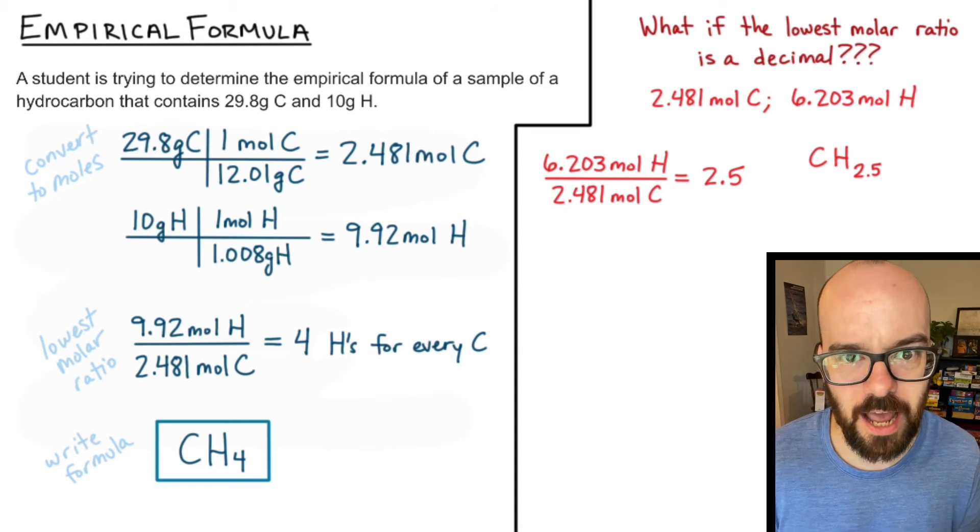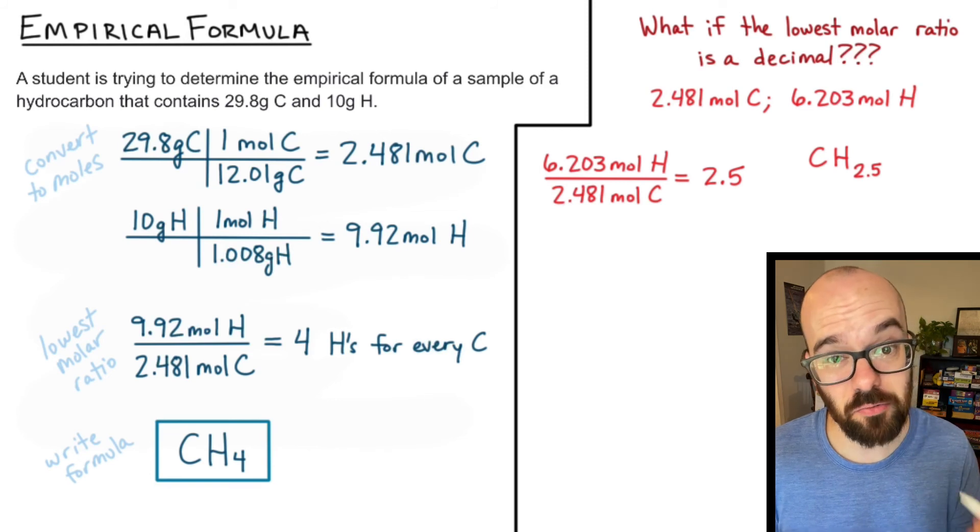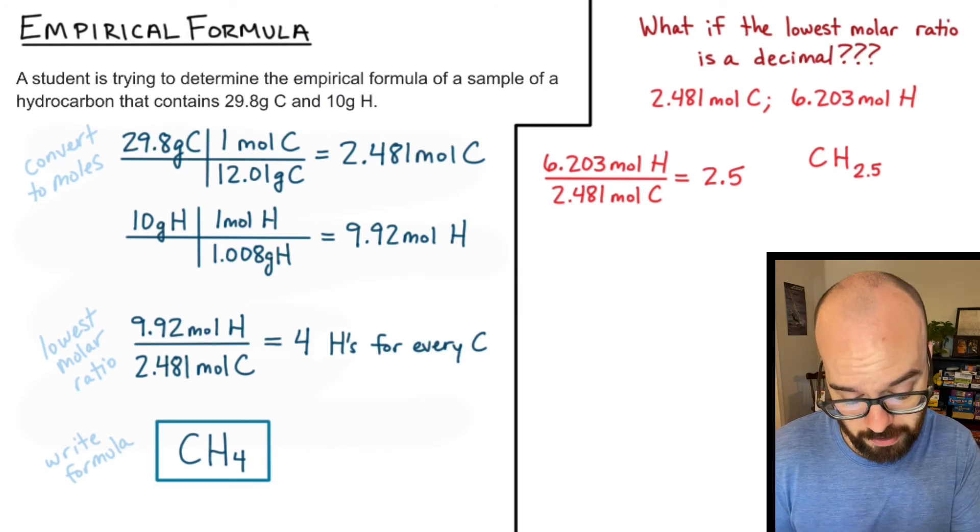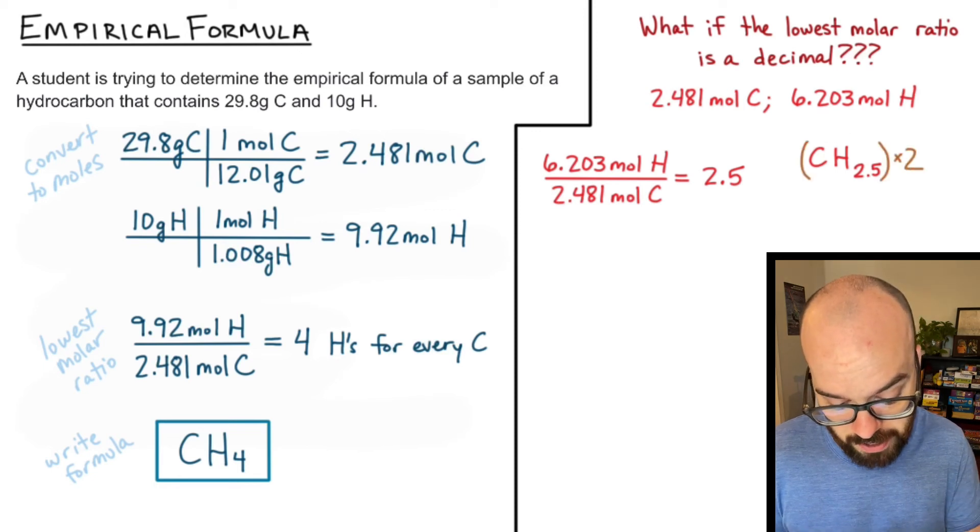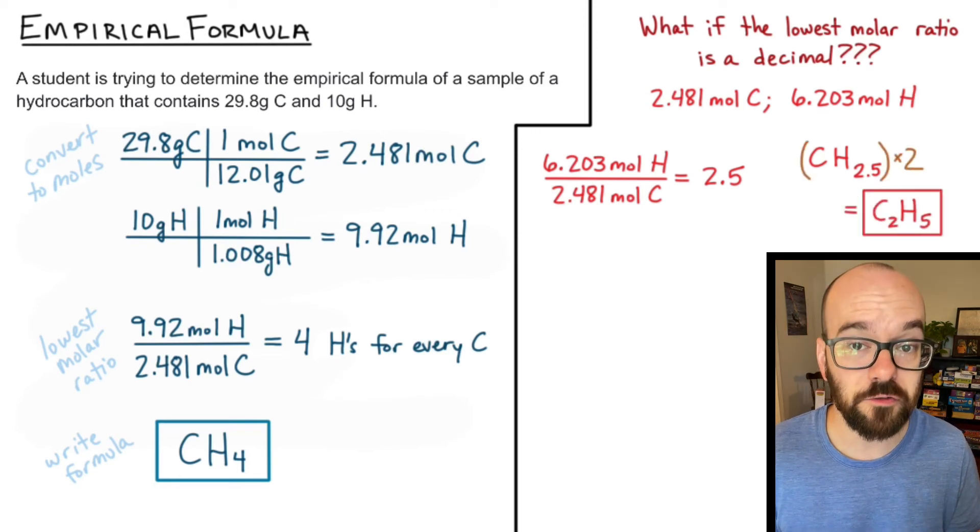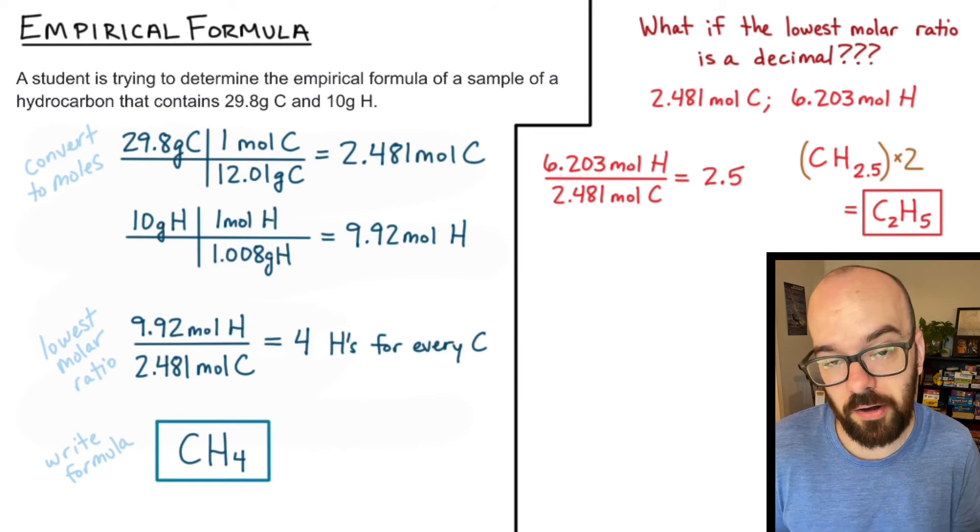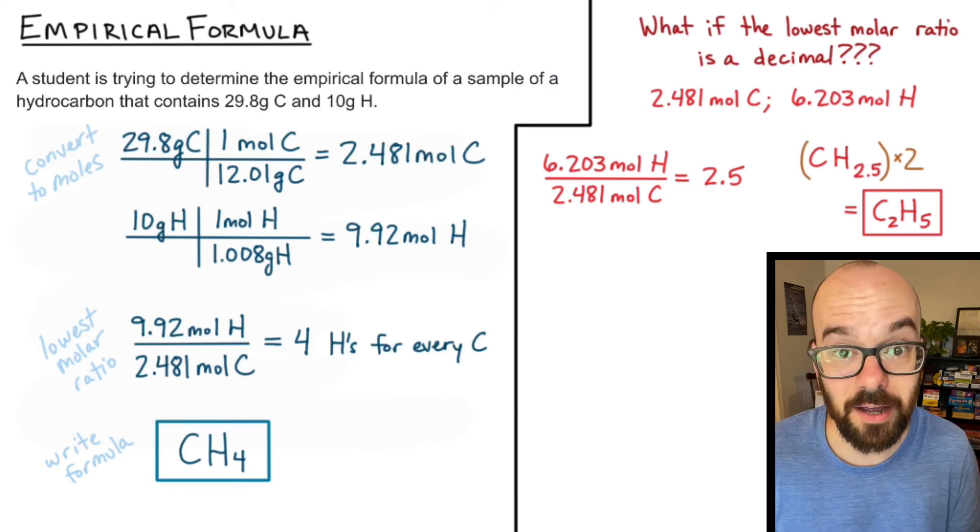But again that 2.5 is just a ratio. So what I can do is I can multiply the number of carbons by 2 and the number of hydrogens by 2 and if I do that I'm going to have C2H5 which I can have because now I don't have a half of an atom in my empirical formula.